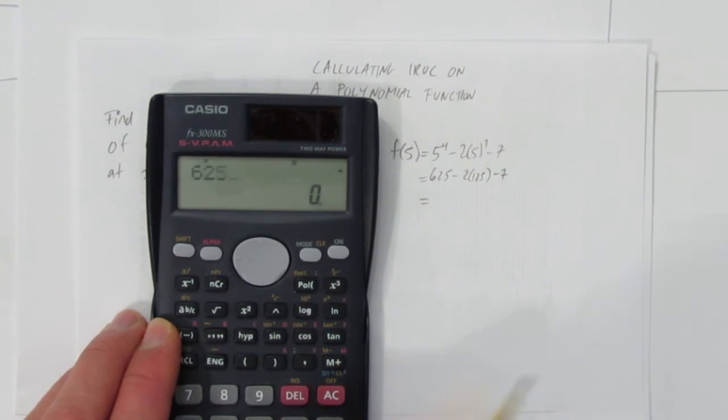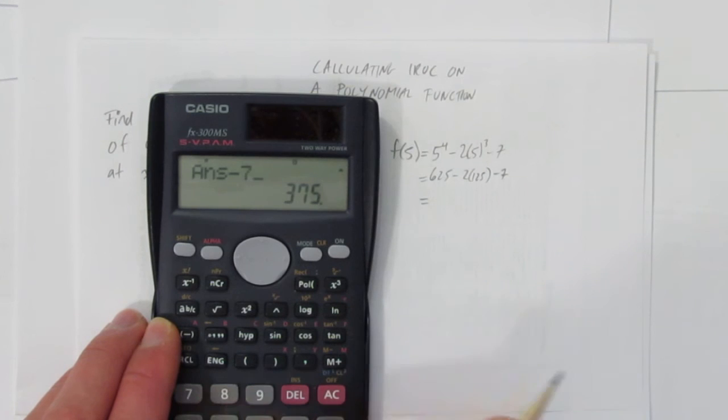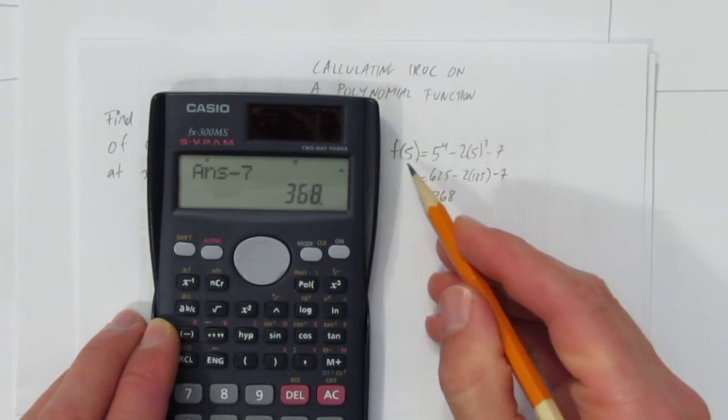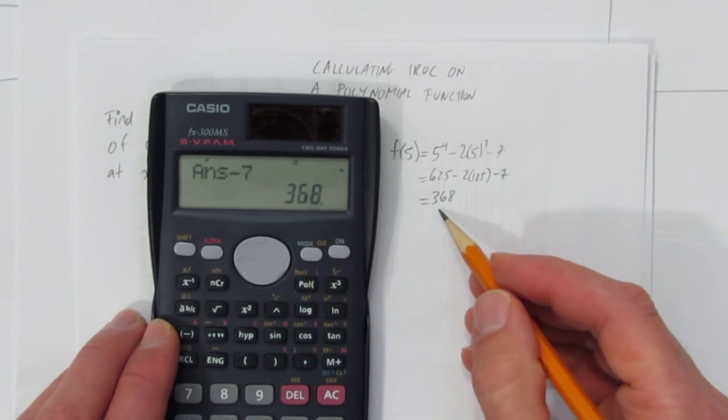And now, let's calculate all that at once. That's a lot for showing our work. Let's do that. Take away 7. And we get 368. So, the value of the function at x equals 5 is 368.